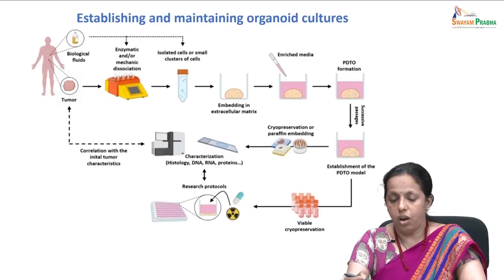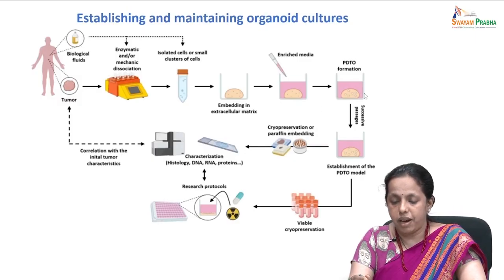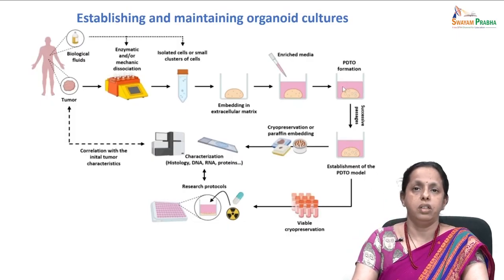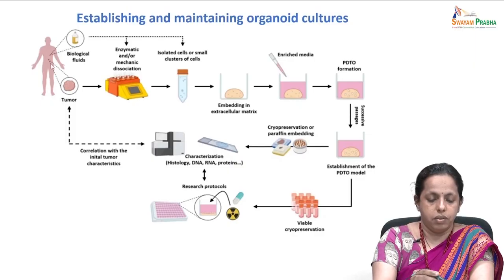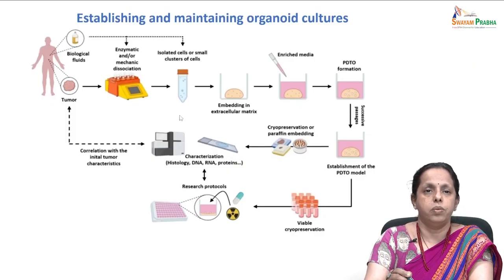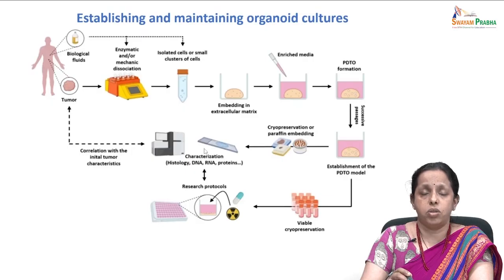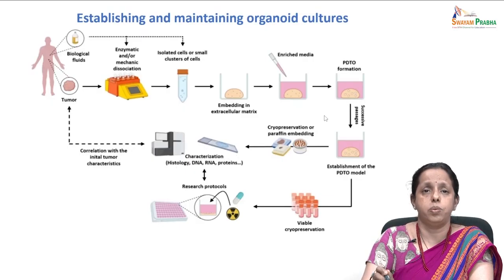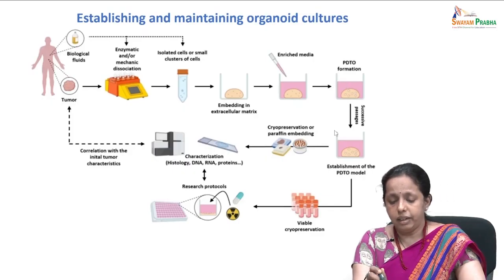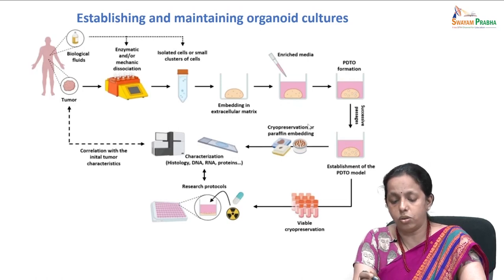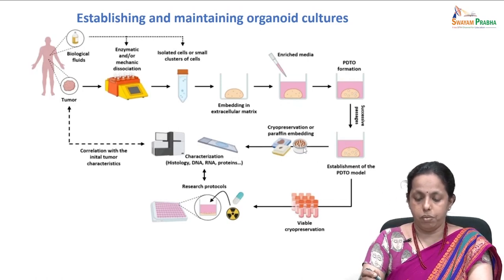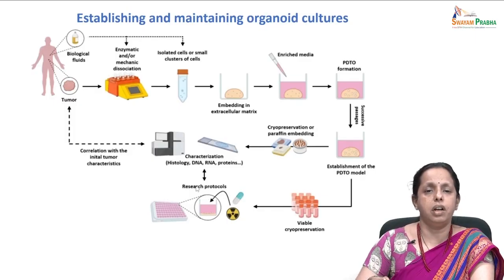As we can see here, in growth factor-enriched medium embedded in extracellular matrix, patient-derived tumor organoids form. The endpoint analysis correlates the original tumor with the organoid before formation — for example, whole genome sequencing, exome sequencing, or proteomic profiles of the whole tumor matched with the organoid. These organoids can be cryopreserved and also paraffin embedded, so several research protocols can be streamlined using organoids for one particular cancer model.